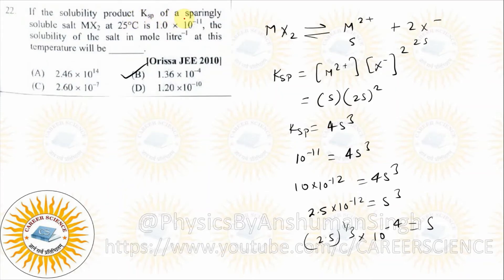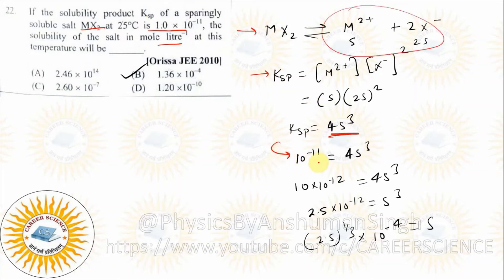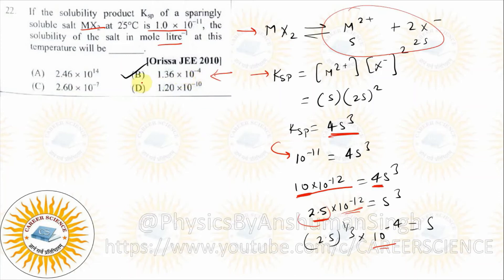Next question: if the solubility product Ksp is given, find solubility of salt in mol/liter. For MX2 salt, there are 3 ions, so obviously Ksp = 4s³. The answer is B.